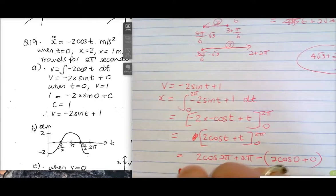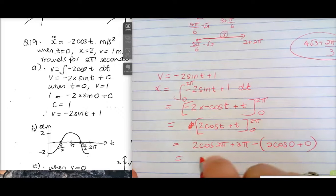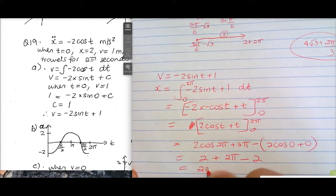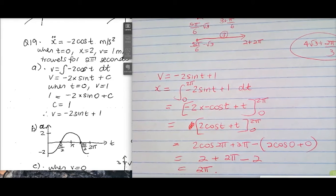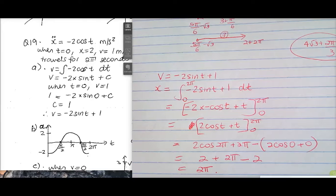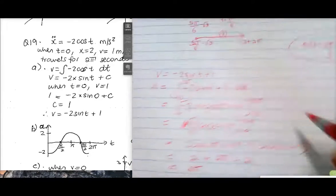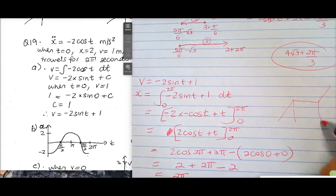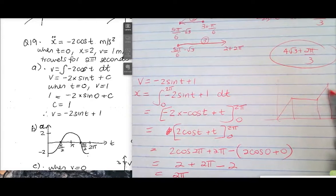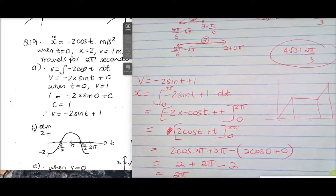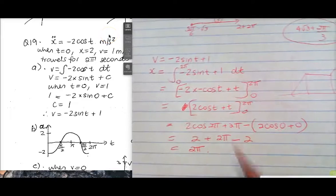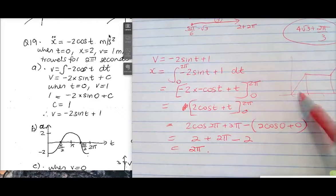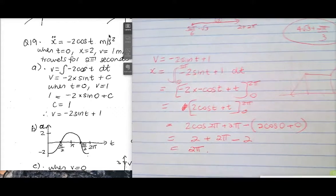Integrating velocity over the whole interval gives displacement, not distance travelled. When doing a graph where the particle doesn't come back down, distance and displacement are the same. But when the particle reverses direction, they differ. So if you want distance travelled and the particle is coming back, you have to do areas of separate sections.